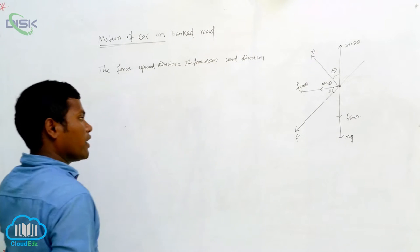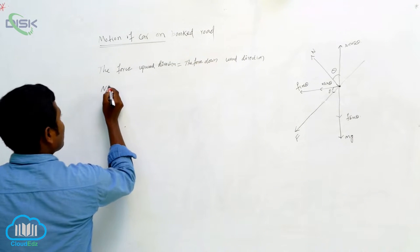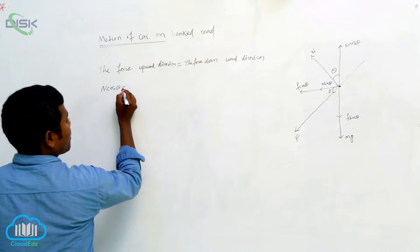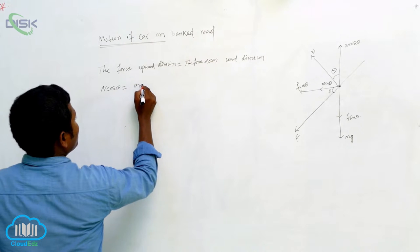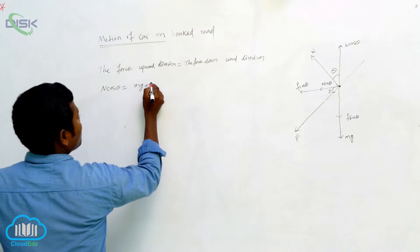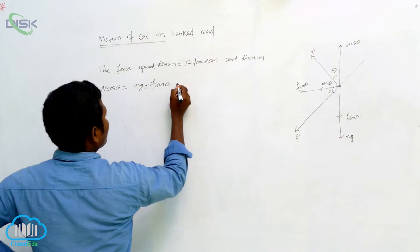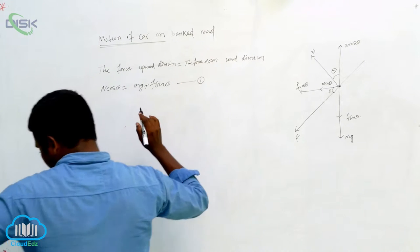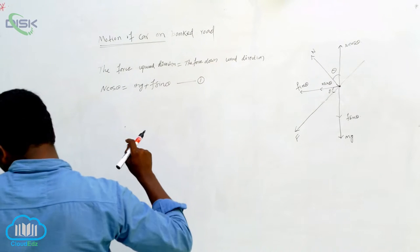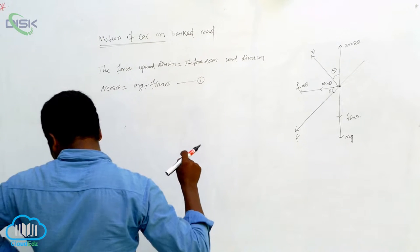The force in the downward direction and upward direction: N cos theta is equal to mg plus f sin theta. This is equation number one. Next, the force acting towards the center of the circular path.